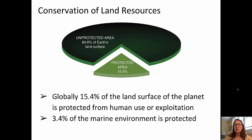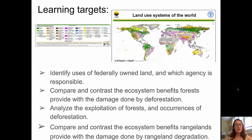In the marine environment, only about 3.4% is protected. We have a lot of work to do in terms of conservation of our land resources. In this video, we talked about federally owned land and which agencies are responsible, compared the ecosystem benefits forests provide with the damage done by deforestation, analyzed the exploitation of forests, and compared the ecosystem benefits rangelands provide with the damage done by rangeland degradation. Go ahead and take your mastery check quiz, and I'll see you in class.